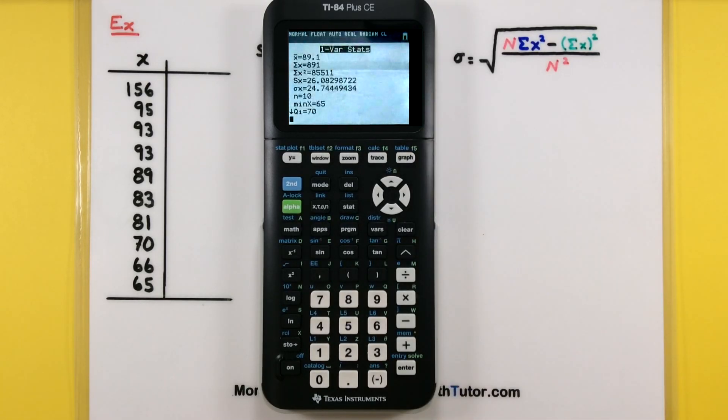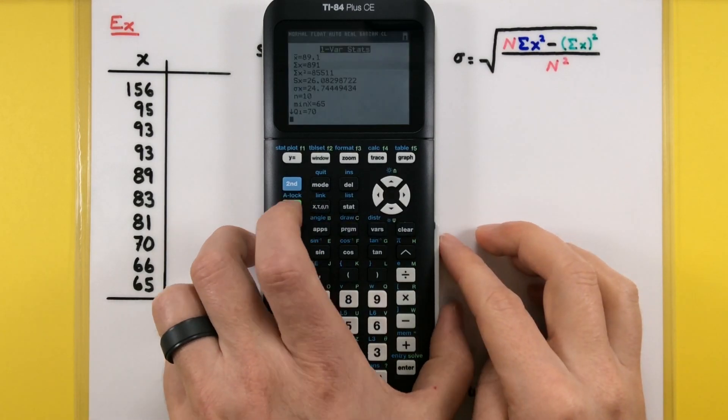The first part is just like the mean. Then we have the sum of the x's, sum of the x squared, all that good stuff. But see right there where it has an S and an X? That is our standard deviation if this represents a sample. And we also have a sigma X. That would be our standard deviation if it represents a population.